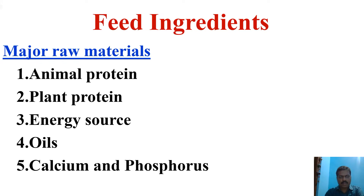First we will see animal protein. What kind of animal protein they are using in the feed? Meat and bone meal, fish meal, blood meal, squid meal, clam meal. Depending upon availability, depending upon the feed protein level, cost is also one of the main factors for inclusion level of animal protein source. Along with that, anti-nutritional factors are parameters that influence the inclusion of animal protein in the formulation.